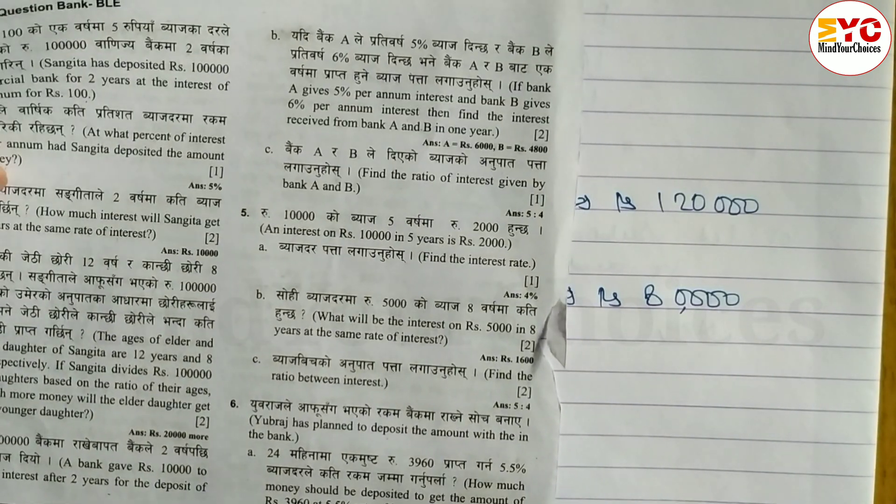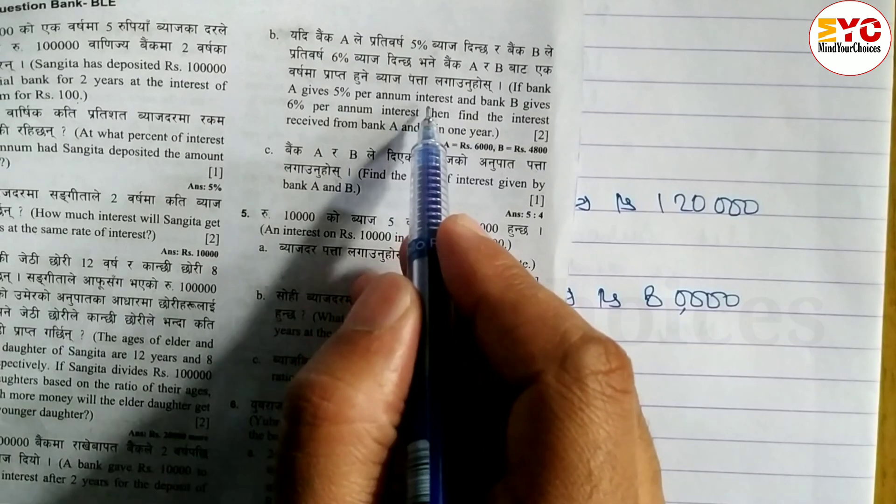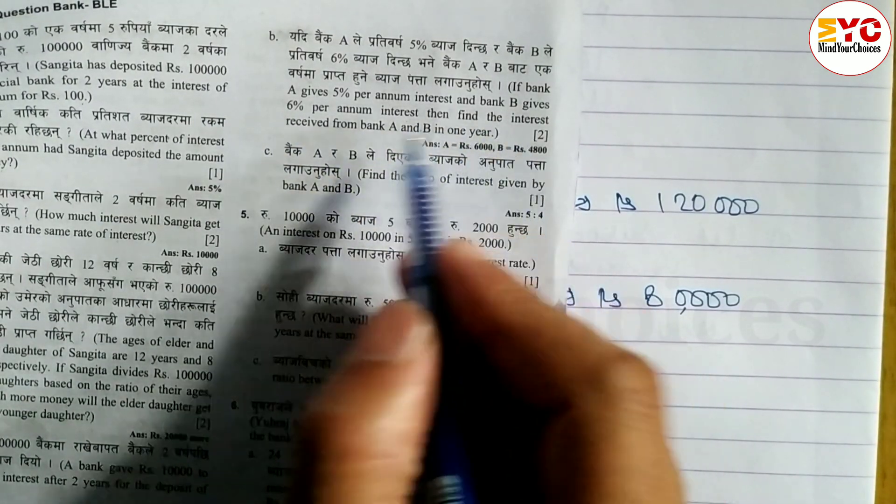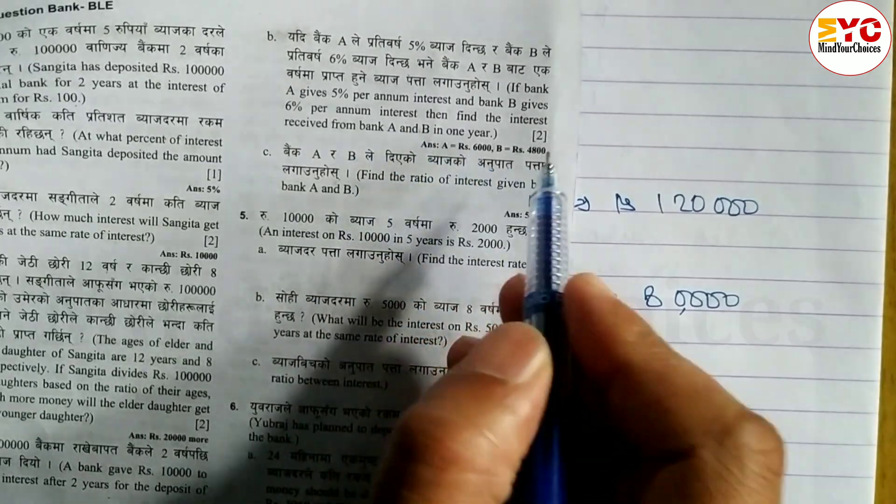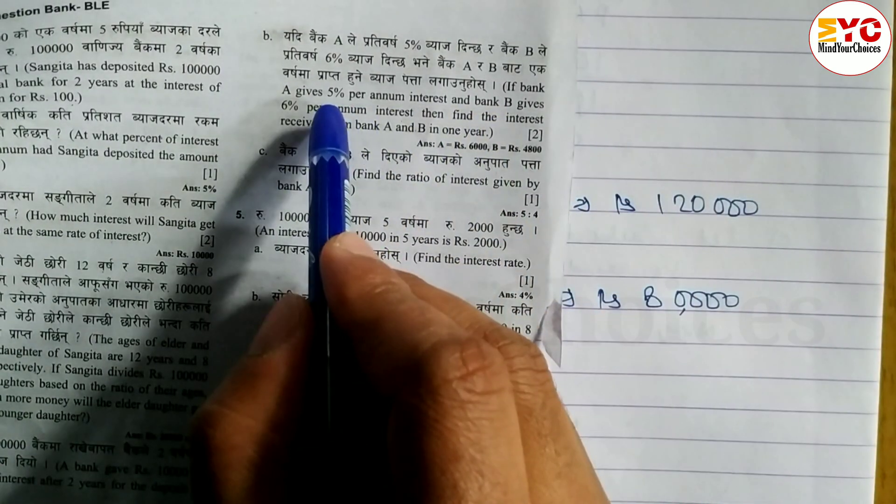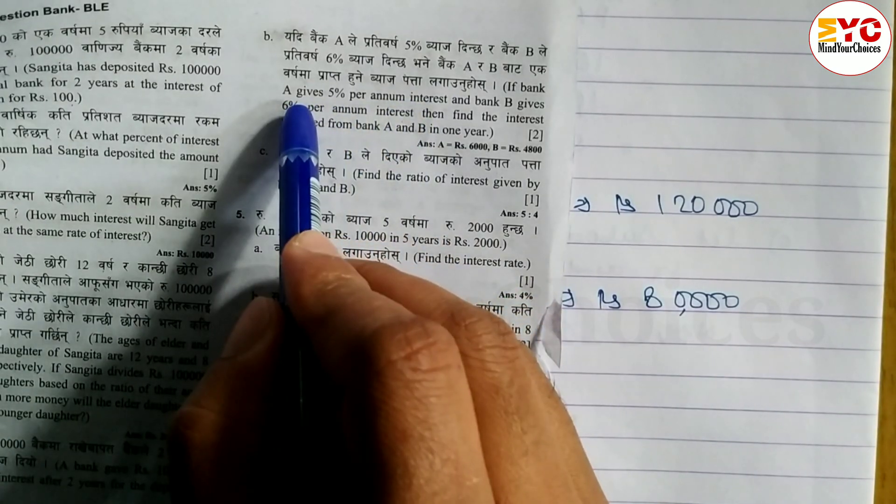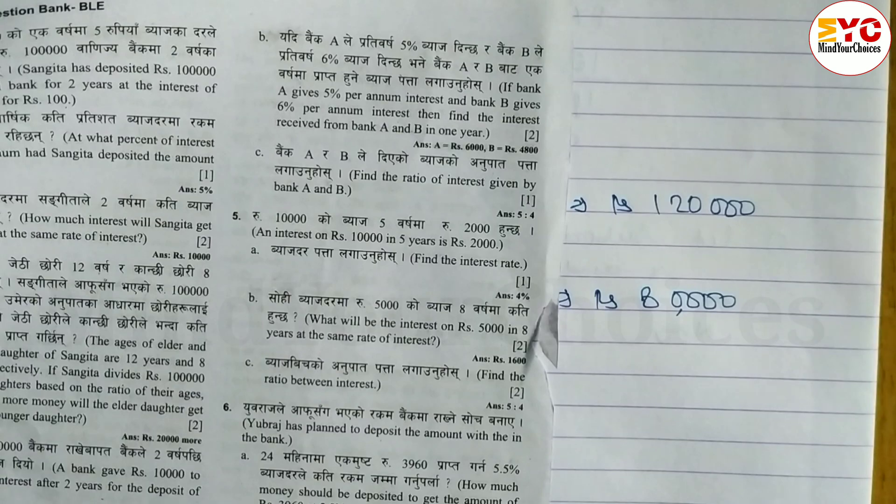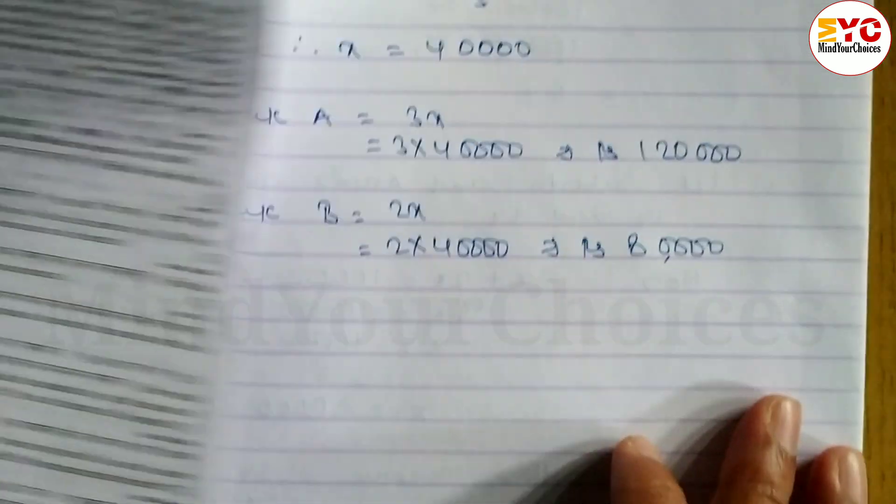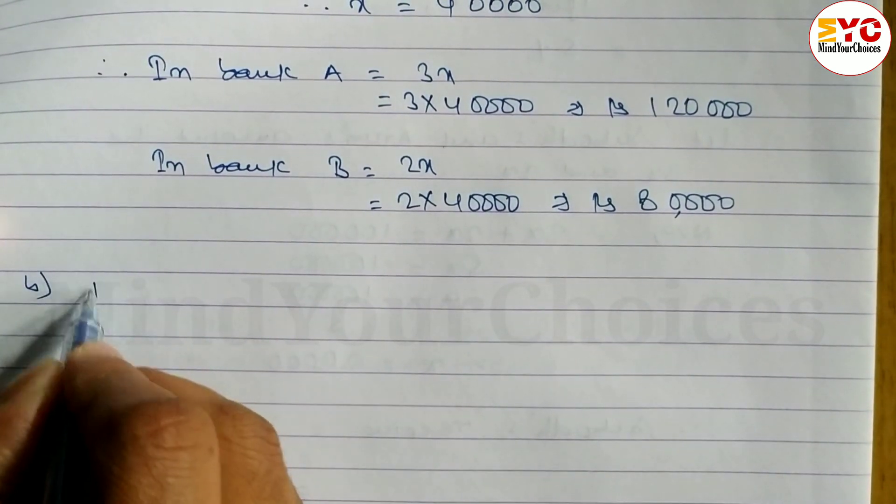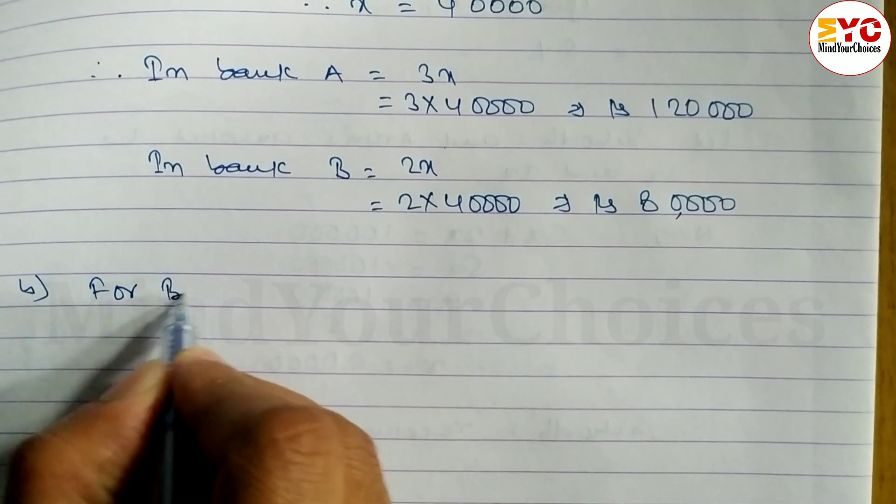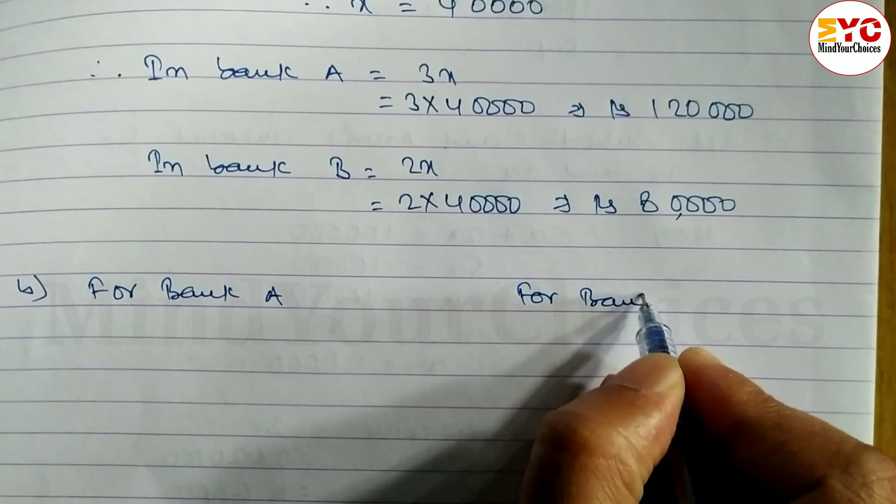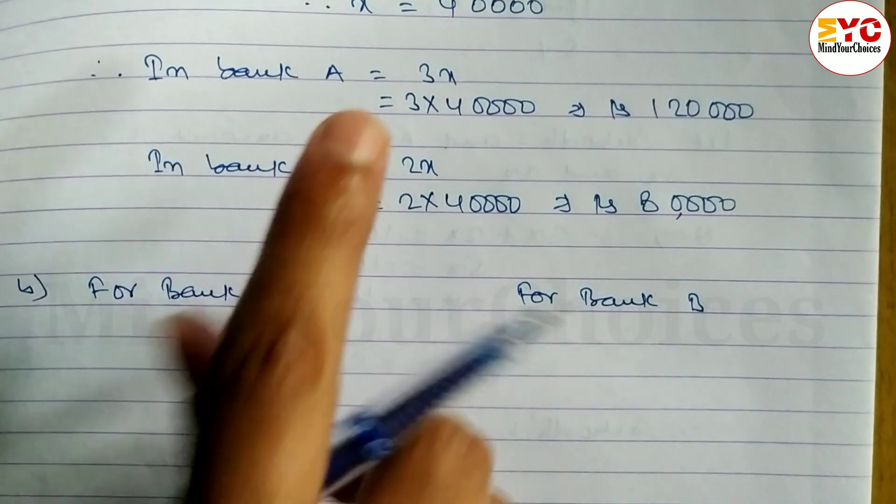Question part B: If bank A gives 5% per annum interest and bank B gives 6% per annum interest, then find the interest received by bank A and B. Bank A gives 5% interest and bank B gives 6% for 1 year. We need to find how much interest is received.